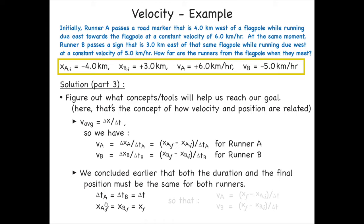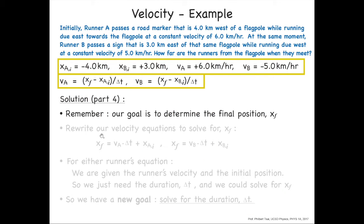So using this notation, we can simplify these equations a little bit. Instead of having all these extra subscripts, we'll just say the one and only final position minus the initial position for runner A divided by the one and only time. Similar for B. So we'll keep those equations handy. And step four is now let's remember that our goal here was to find the final position xf. We're trying to get this variable. So we're going to rewrite our velocity equations so that we're able to solve easily for the thing we're trying to solve for, the final position.